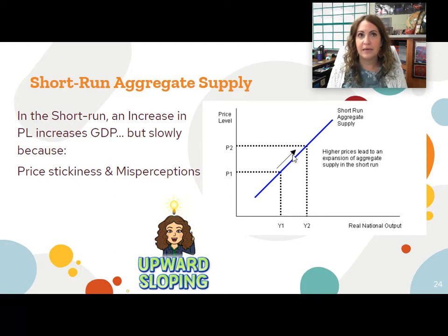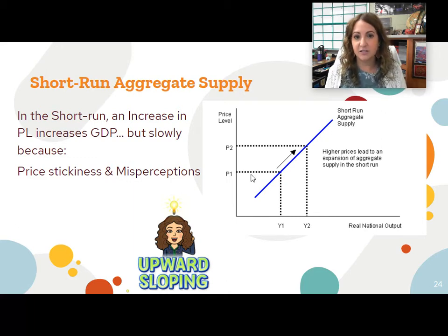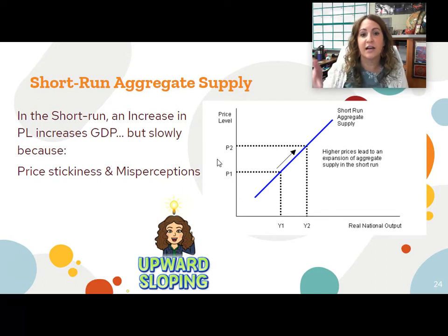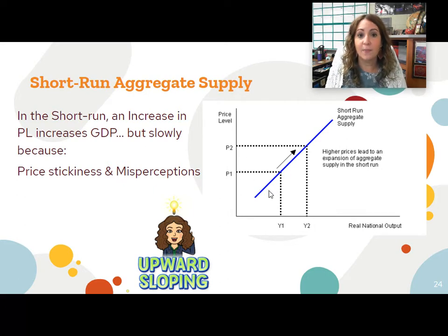It's slow, but it is a positive relationship — slow to go up, meaning when prices increase, GDP will increase slowly but eventually it will increase. And there are two reasons why that happens: price stickiness, which we've talked about before. Prices are slow to adjust; it takes a while for prices to change at stores or to filter down through the entire economy.